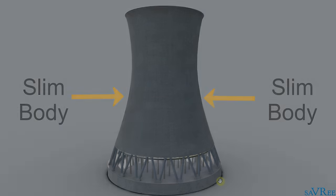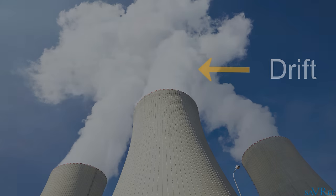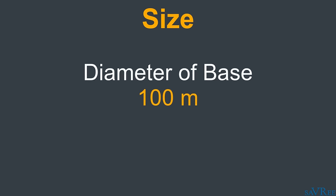You'll often see drift coming out of the top of natural draft cooling towers. It actually looks like smoke, but it's actually just evaporated cooling water. The diameter of the base itself may be up to 100 meters, and sometimes they'll be up to 200 meters in height.